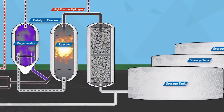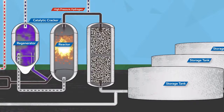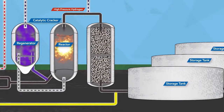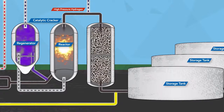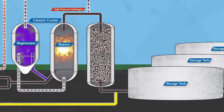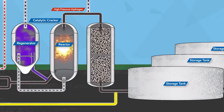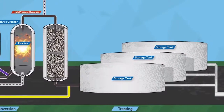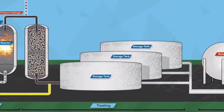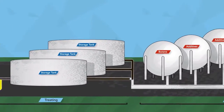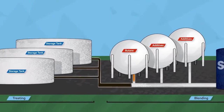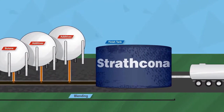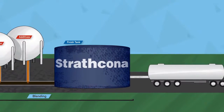Treating removes natural impurities in crude oil such as sulfur and nitrogen, which is essential to meet stringent product quality specifications and environmental standards set out by regulators and government. The treated, purer products can then go through the blending stage to produce fuels that suit different types of vehicle engines and weather conditions.